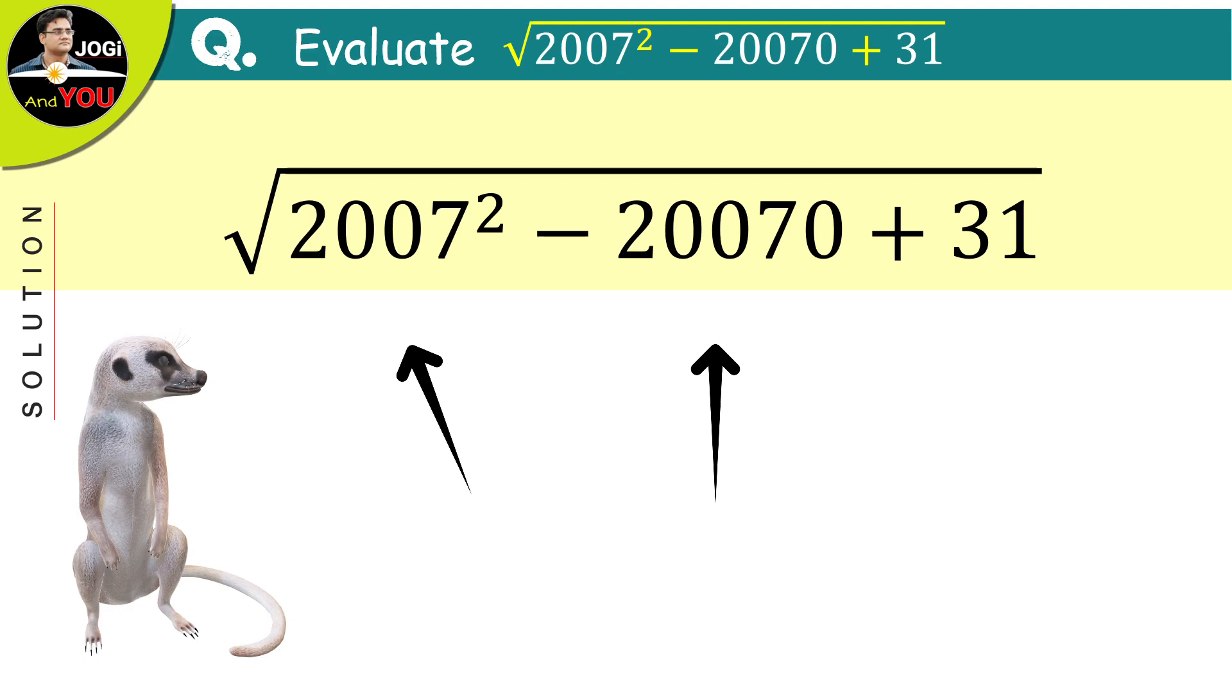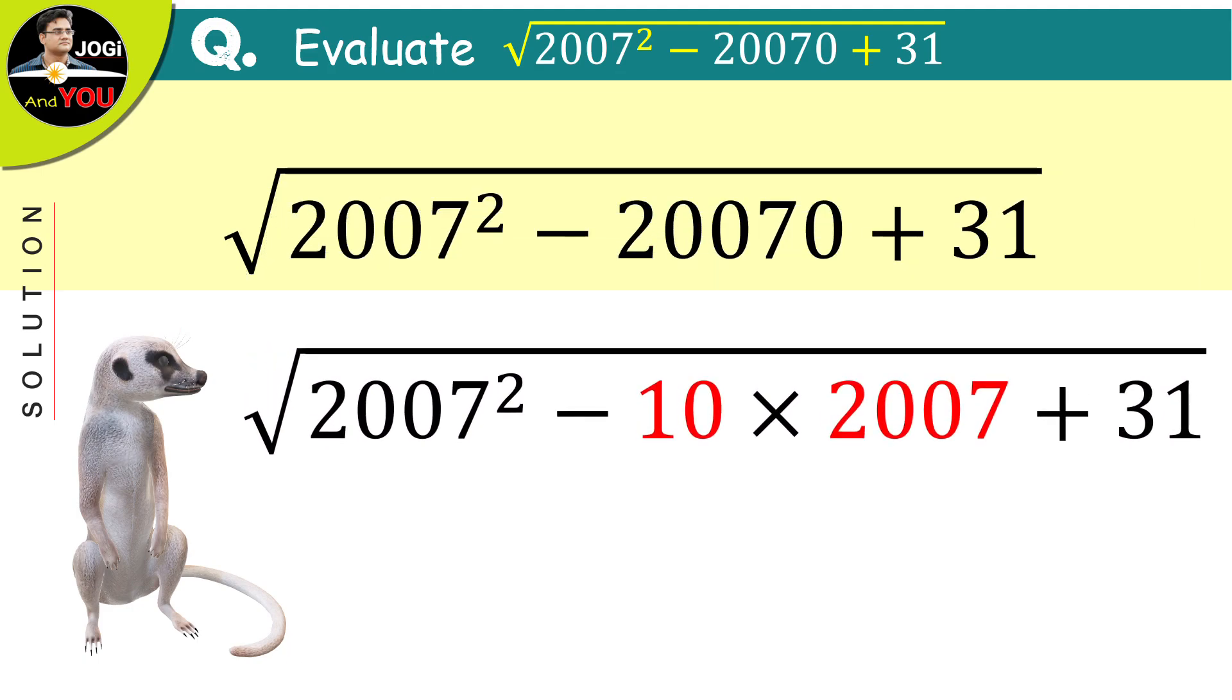Just if we factorize the middle term as 2007 multiplied by something, then both of these terms will start feeling the same. Look, exactly like this. So the middle term will now be 10 times 2007.